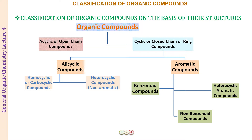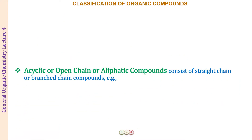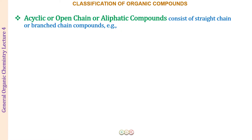Quickly draw this chart onto your notebook so that when we are discussing these types, it is easy for you to understand. We have broadly classified organic compounds into two: acyclic and cyclic.